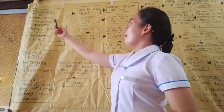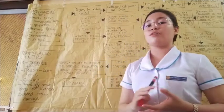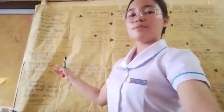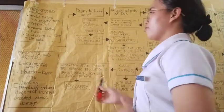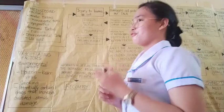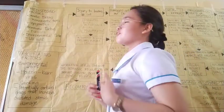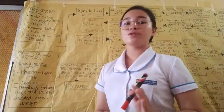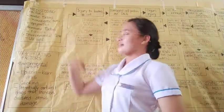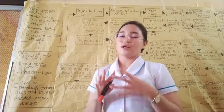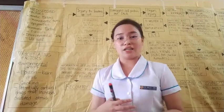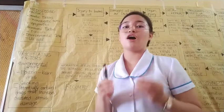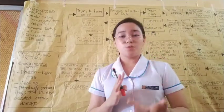The predisposing factors, also known as the non-modifiable factors of this disease, include genetic factors, hormonal factors, and environmental factors. Under genetic factors are monozygotic twins and epigenetics — when there is already a faulty genetic aspect passed down. Genes play a big role in the development of this disease.